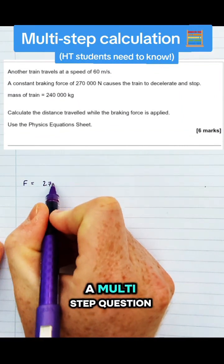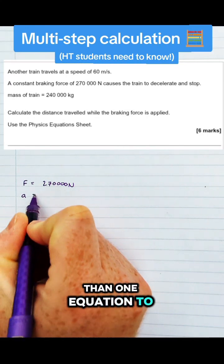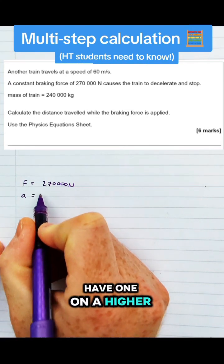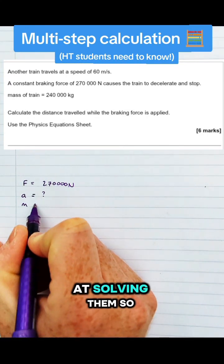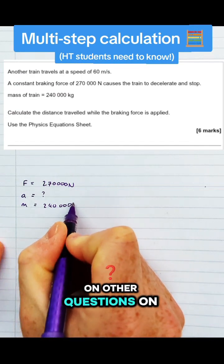Now the question is a multi-step question, meaning it needs more than one equation to solve it. And you'd expect to have one on a higher tier paper, so let's get good at solving them so they don't take that long and we can focus on other questions on the paper.